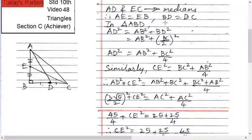Therefore, AB square plus BD is what? BC upon 2 the whole square. Therefore, BC square upon 4. So AD square equals AB square plus BC square upon 4.